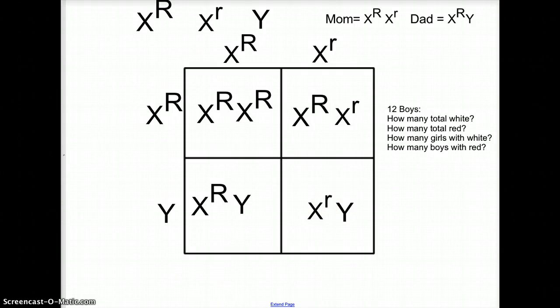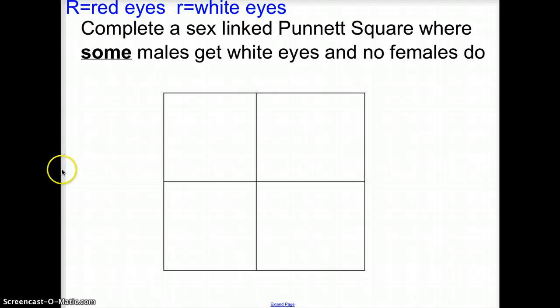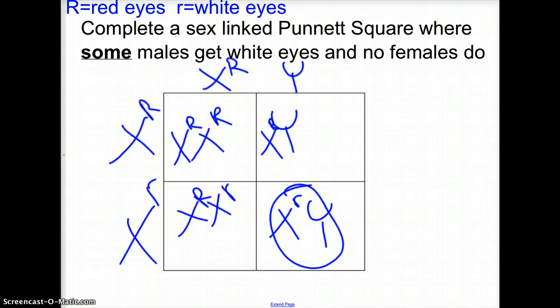Let's do this example here. So now I said complete a sex-linked Punnett square where some males get white eyes but no females do. So that's the exact Punnett square that we just made. So you'd make this one and you say, okay, some of the males do, half of the males do, and none of the females do.